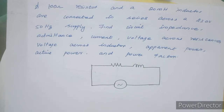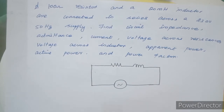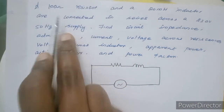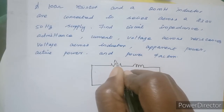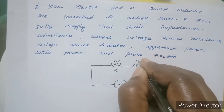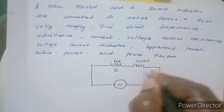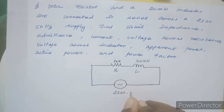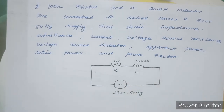We have an RL circuit with a supply line. The resistance is 100 ohms, inductance is 20mH, and the supply is 230V at 50Hz.